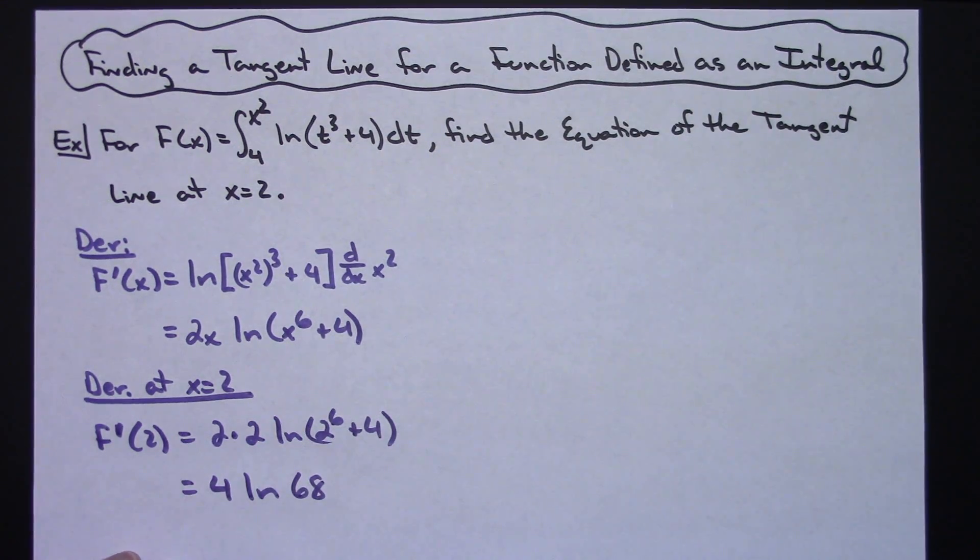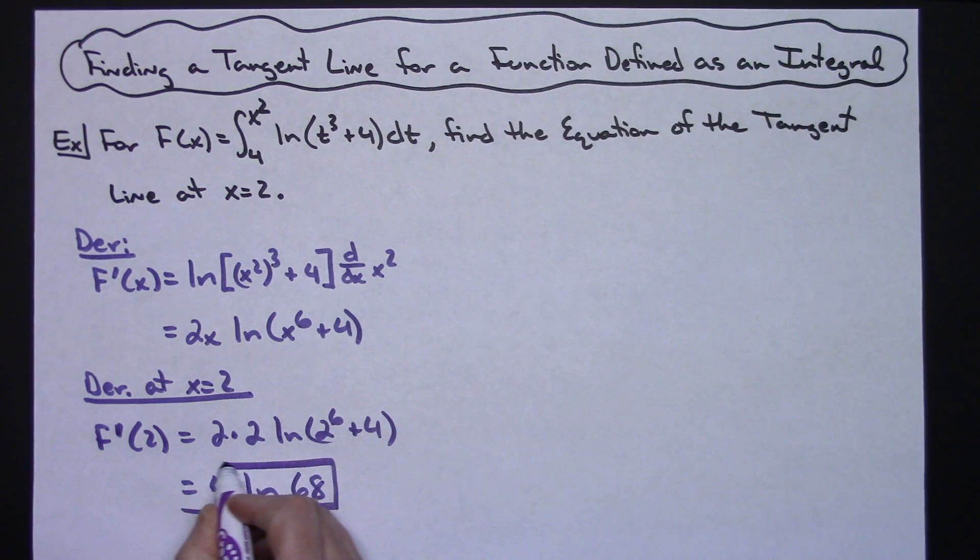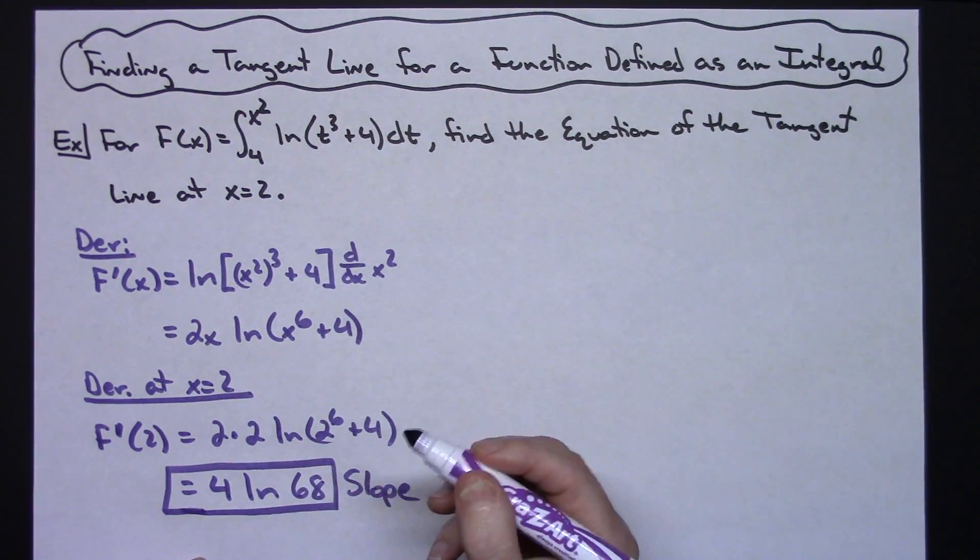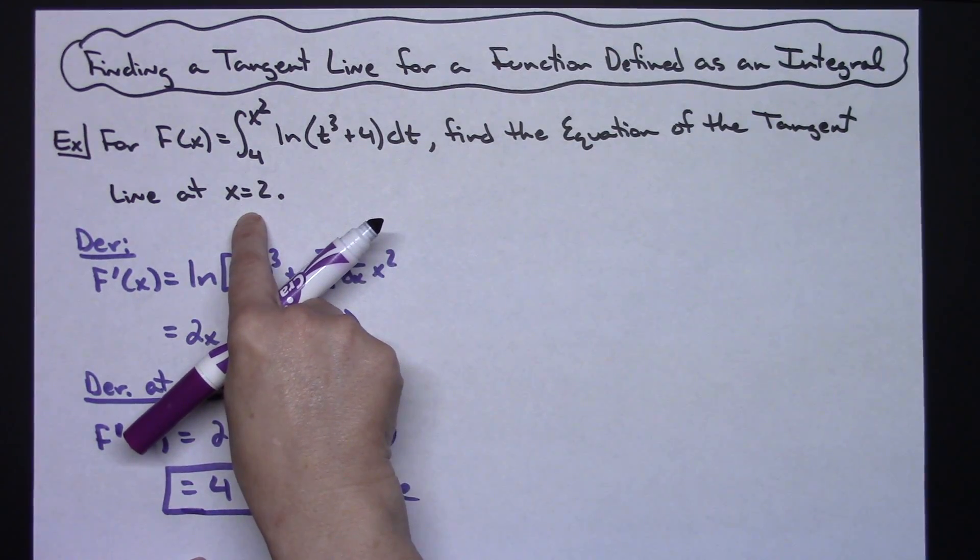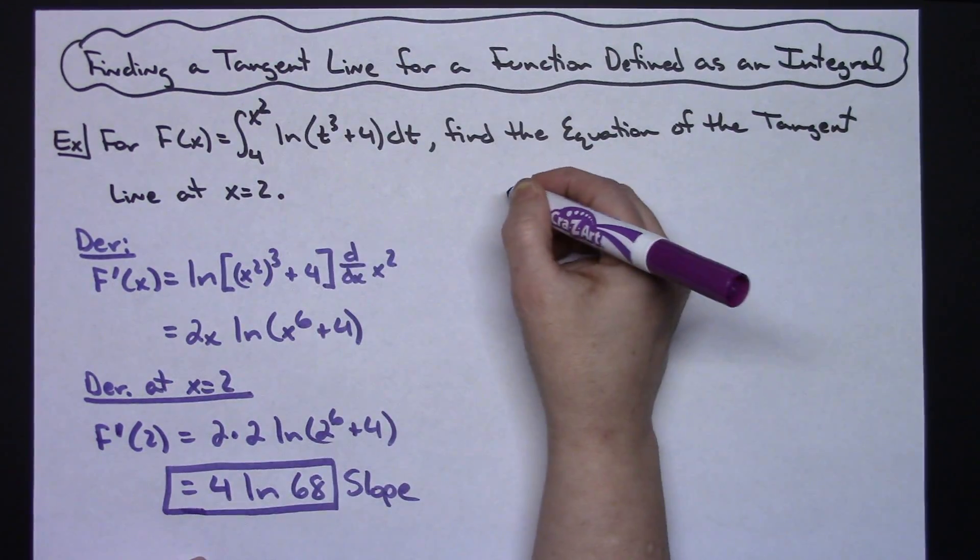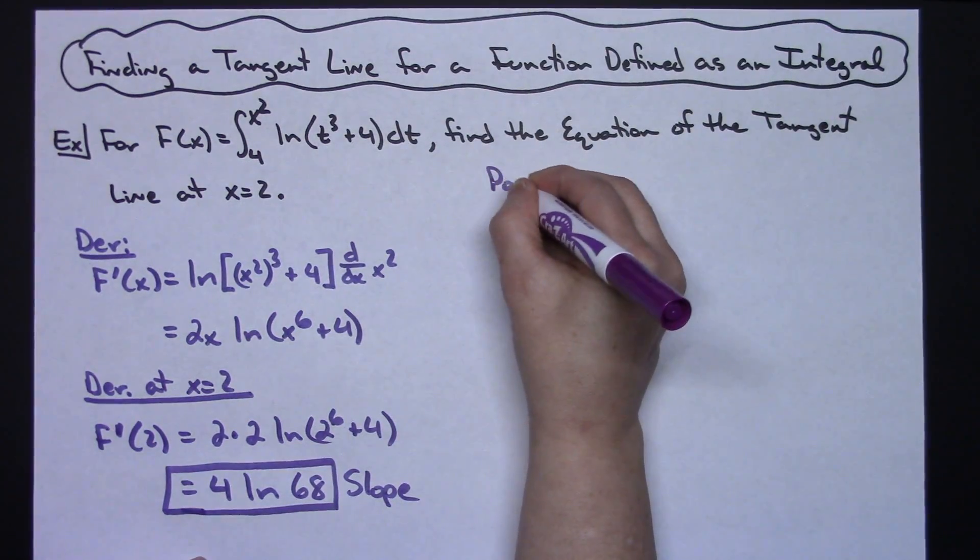So now I have my derivative at 2. That derivative at 2 is going to be my slope of my tangent line. Now I need for point-slope form, which is just about the easiest one to do, I need to find a point. Well I know it's at x equals 2, so we've got to plug it into that original function to find my point.